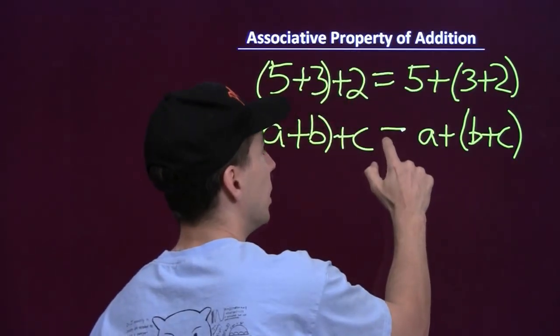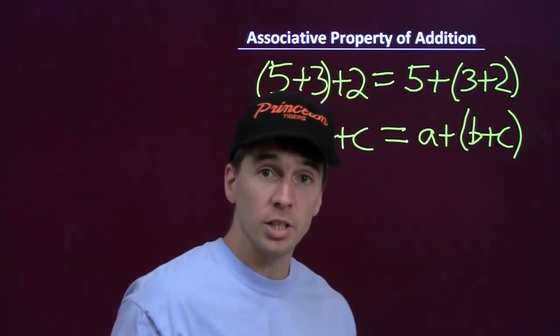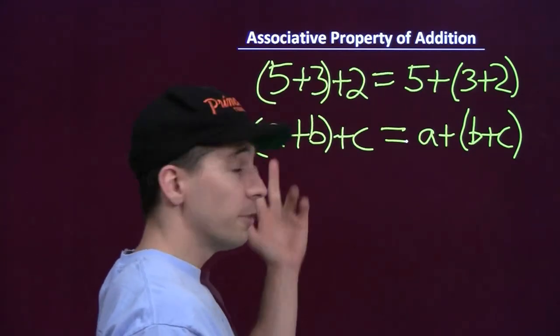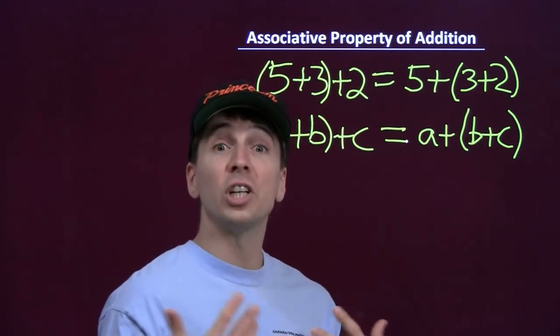These two have to be the same. And that's what the associative property of addition tells us. It tells us it doesn't matter if we add the first two first or the last two first, you're going to get the same sum.